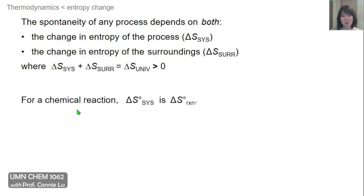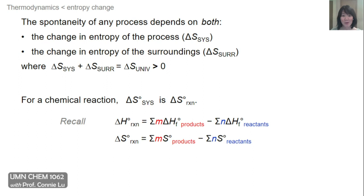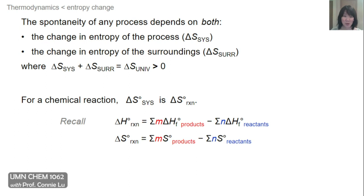Because we're interested in chemical reactions, we can replace the change in entropy of a system with that of the reaction. To solve for the entropy change of a chemical reaction, I'll remind you of Hess's law, where we can calculate delta H of the reaction using a similar equation. One subtlety is that the delta is missing on the entropy side, because heats of formation are considered relative, but entropies of molecules are absolute values — due to the third law of thermodynamics, which defines zero entropy as a perfectly ordered crystal at zero Kelvin.